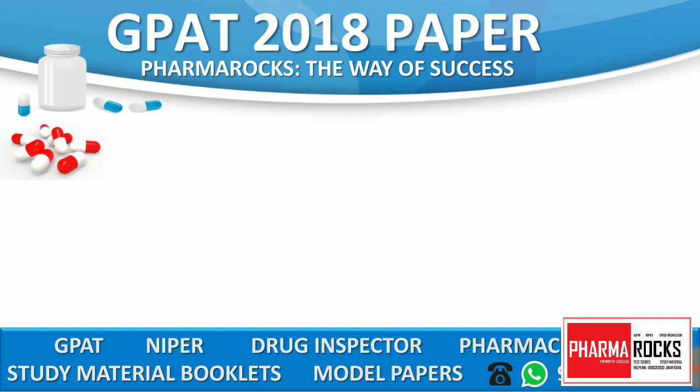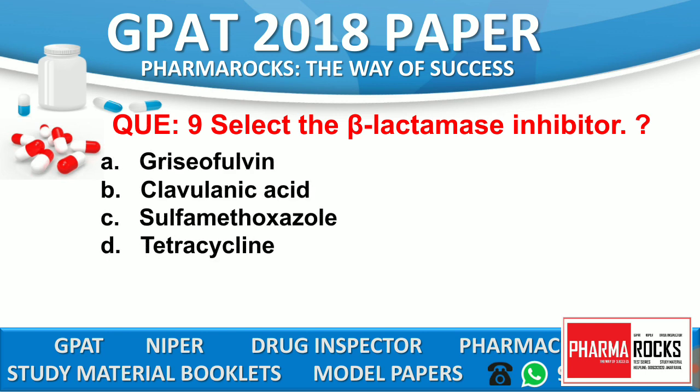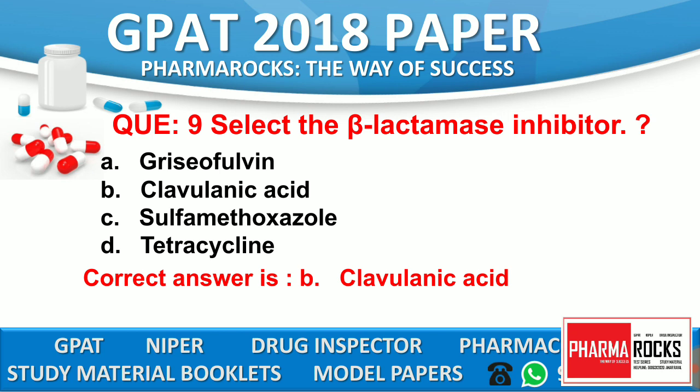Question number 9: Select the beta-lactamase inhibitor. Option A: Griseofulvin. Option B: Clavulanic acid. Option C: Sulfamethoxazole. Option D: Tetracycline. The correct answer is B — clavulanic acid. Clavulanic acid is the selective beta-lactamase inhibitor.